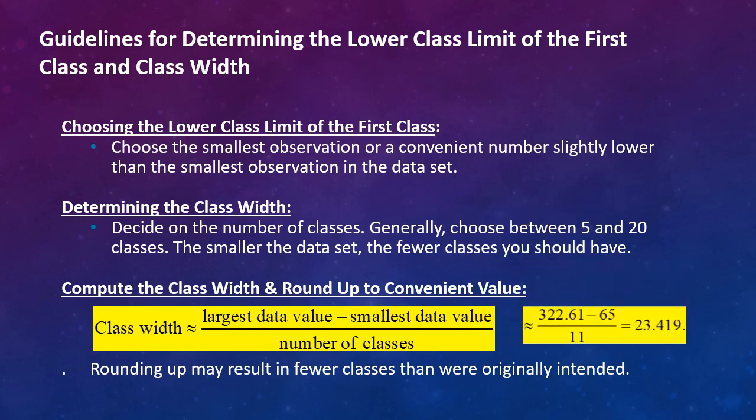Then determine the class width. Decide on the number of classes. Generally, you're going to choose between 5 and 20 classes. The smaller the data set, the fewer classes you should have. Once you get beyond 20 classes, it's hard to relate the data and make good observations. Then compute the class width and round up to a convenient value. So here you're simply taking the largest data value minus the smallest data value and dividing by the number of classes. Then round up so that you cover all the classes and to some convenient number. In the last example, when we calculated 322.61 minus 65 divided by 11 classes, we got $23.419, which we then raised to 25. Notice that rounding up may result in fewer classes than you were originally intended, but it shouldn't take a lot of the classes out.